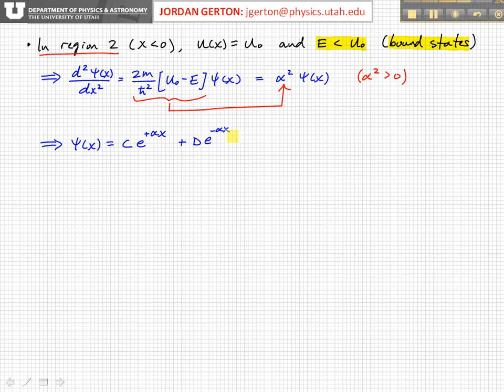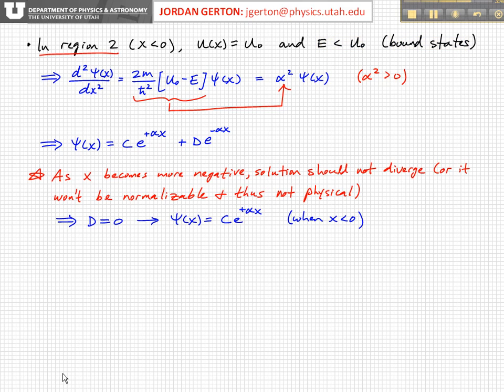Now, physically speaking, as X becomes more negative—as we go outside the box further and further to the left—we can't have the wave function diverge there. We can't have it trending towards infinity, because if that were the case, then when we try to normalize this wave function by integrating over all space, we would never be able to get an integral with a finite value.